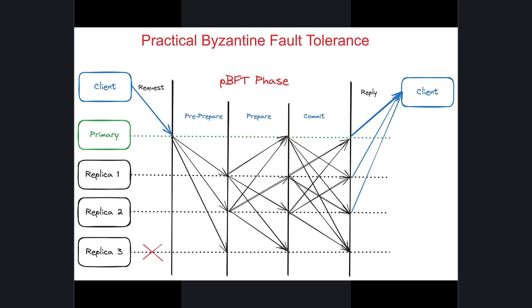The key steps are the request phase, pre-prepare phase, prepare phase, commit phase, and the reply phase. In the request phase, the client sends a request to the primary node, then the primary node broadcasts the request to all other nodes in the network, sending the request to all the replicas in the system.